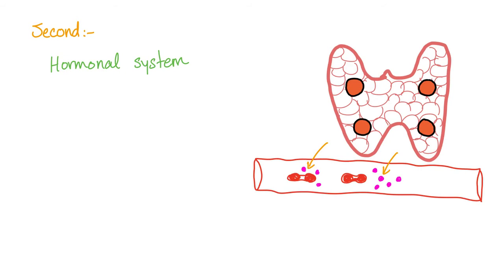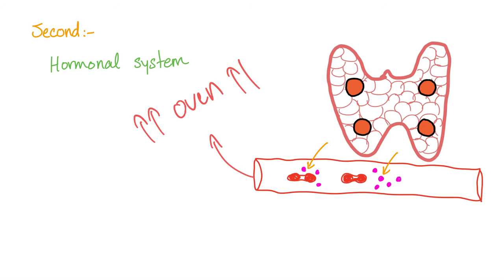Second, the slow system — the hormonal system. We have some glands called endocrine glands, such as the thyroid gland, and it will secrete thyroid hormone directly into the bloodstream. Thyroid hormone is like the oven of your body — everything runs hot and fast. Patients with hyperthyroidism feel hot all the time, all their systems work very fast, and they lose a lot of weight. On the other hand, patients with low thyroid level — hypothyroidism — gain weight and feel cold. So hormones are very, very important.